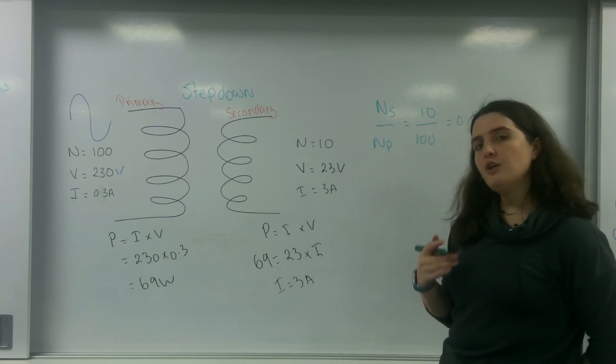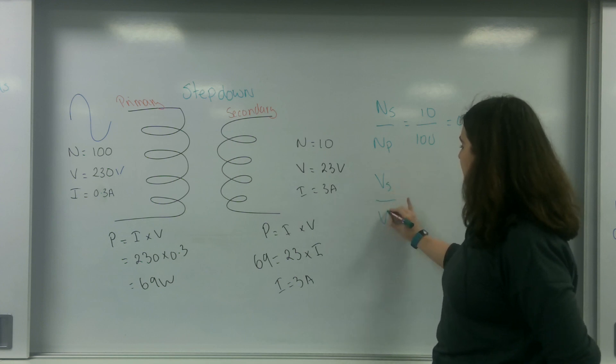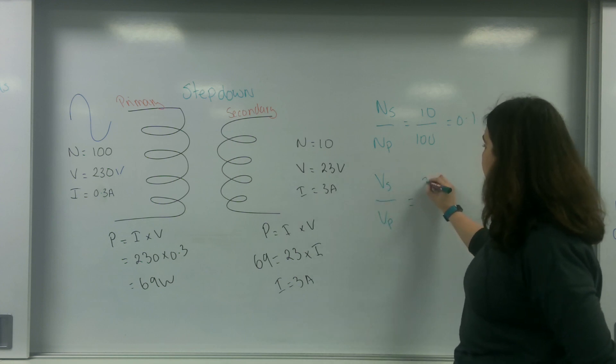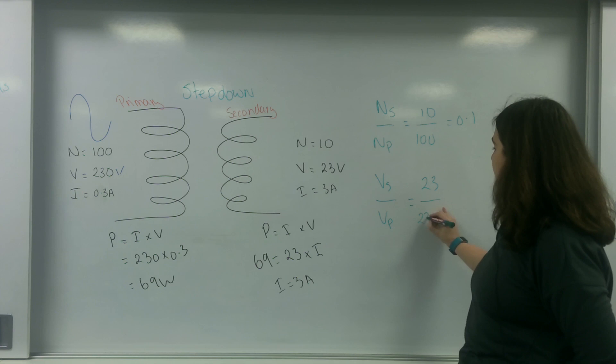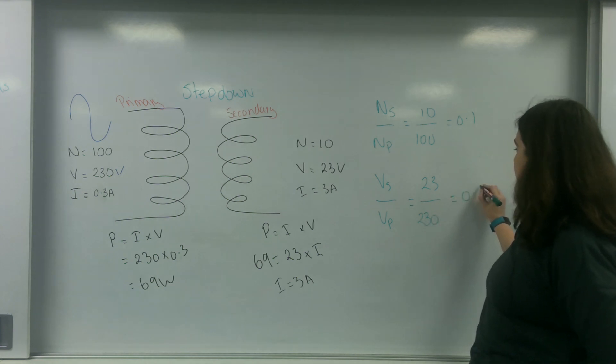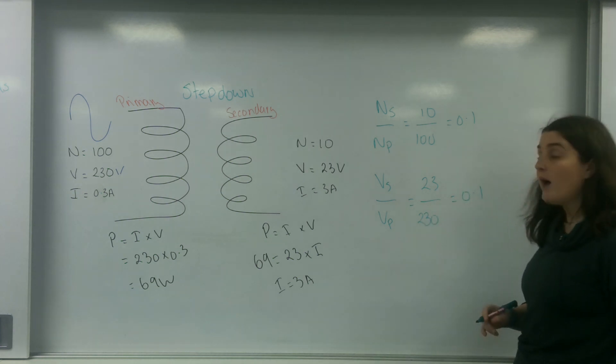If I look at my voltage between my secondary and my primary, I would have 23 over 230, which is also 0.1.